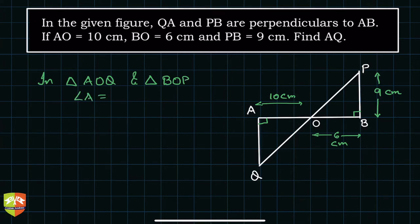Angle A is equal to angle B, both are 90 degrees, because QA and PB are perpendicular to AB. And angle AOQ is equal to angle BOP, and this is because of vertically opposite angles.